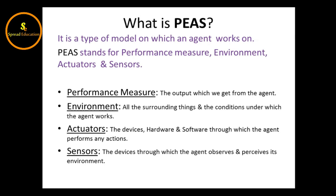Performance measure is the output which we get from the agent — what is the output of the agent. Environment refers to all the surrounding things and the conditions under which the agent works, that is what we call the environment.